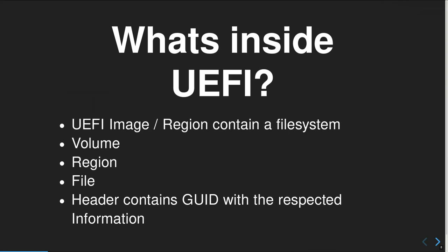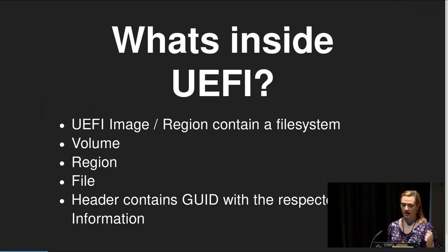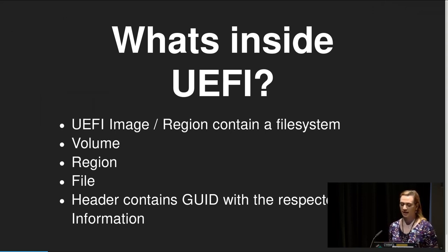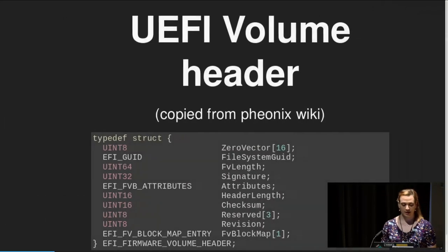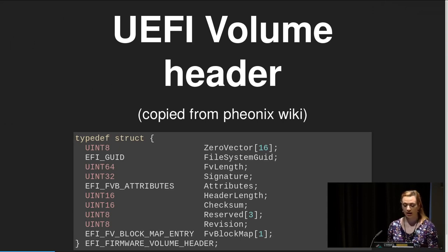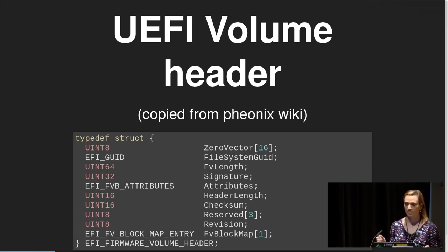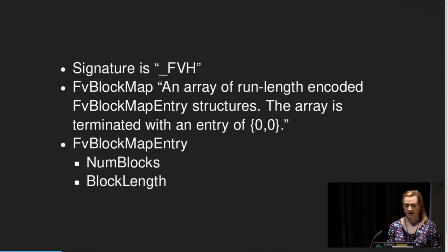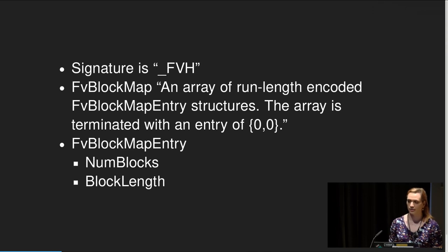What exactly is UEFI? The UEFI region is a file system separated into three structures: volumes, regions, and files. Volumes and regions are specified; files can contain free-flowing information. The header of a UEFI structure — volume, region, or file — contains an identical GUID with the respective information on what we are looking at. If we take a look at the volume header, we have 16 bytes of zero, then our volume GUID, firmware length, a signature, attributes, header length, checksums, and so on. You can usually see those 16 zeros by eye.